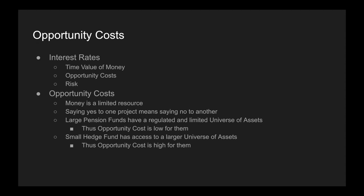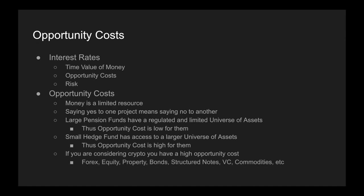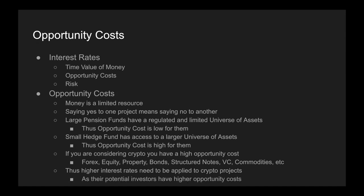Whereas small hedge funds or retail investors have access to a larger universe of assets, so the opportunity cost is going to be high for them — they demand a higher interest rate on whatever they look at. So if you're considering crypto, you personally also have a high opportunity cost, because there's a whole host of other things you could have been investing your money in: forex, equity, property, bonds, structured notes, venture capital, commodities, etc. Thus higher interest rates need to be applied to crypto projects, as their potential investors have higher opportunity costs.